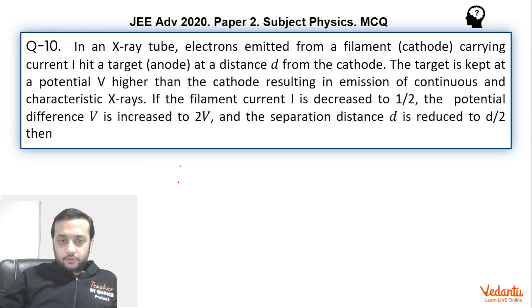If you just want to recollect the graph between the intensity and the wavelength, we get this sort of graph. And these are K alpha, K beta.